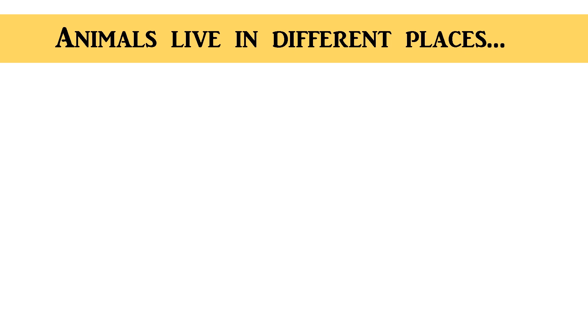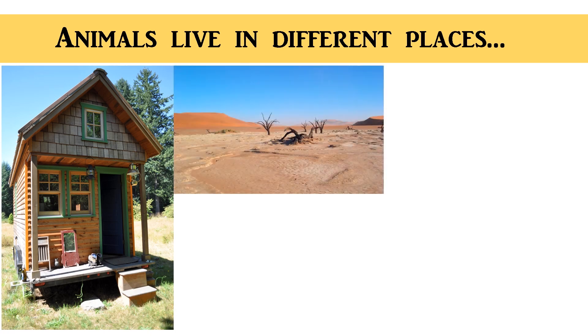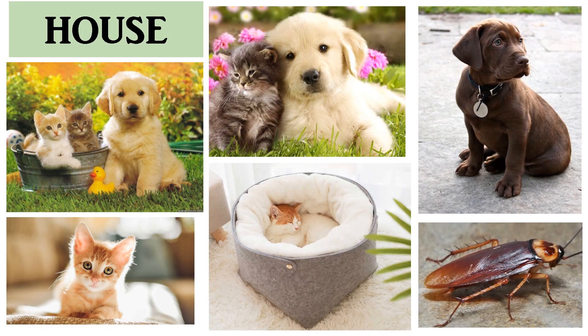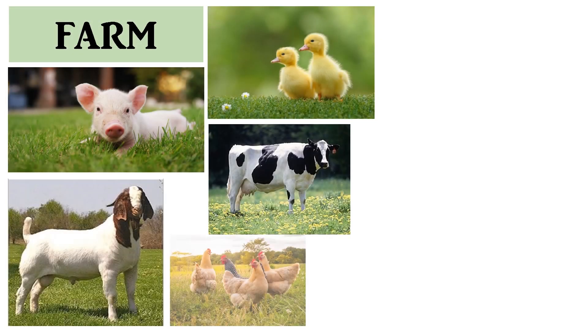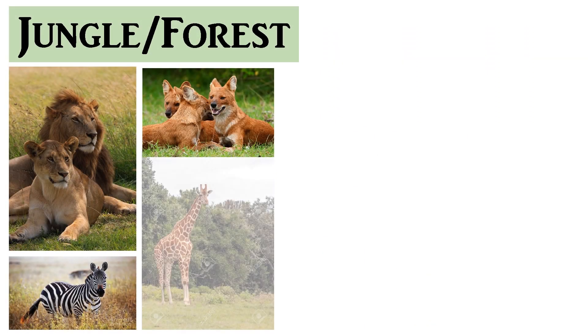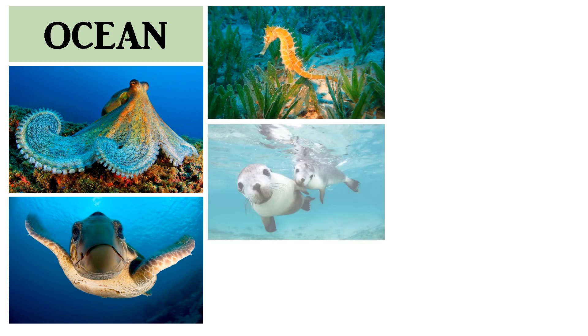Some animals live in our house as pets, while some live in the deserts, forests, and oceans. Here are some animals that live in our house. The animals that live in the desert. The animals that we can see in the farm. The animals that can be found in the jungle or forest. The animals that live in the ocean.